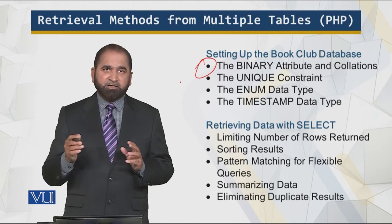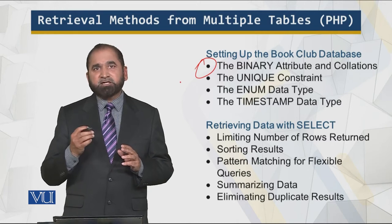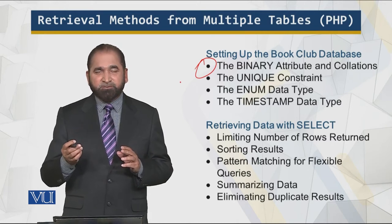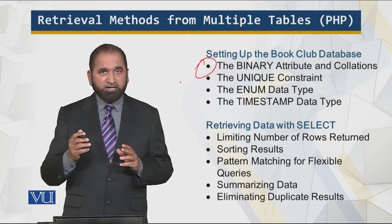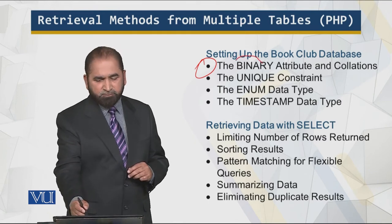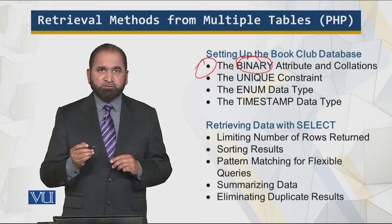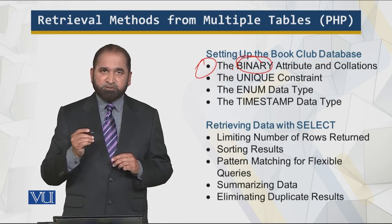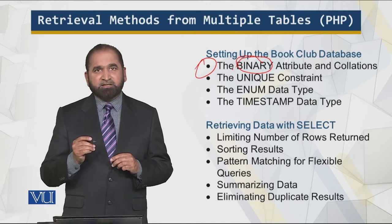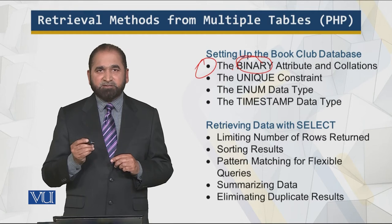If I run a query and retrieve something starting with capital B or lowercase B, the engine will not differentiate. To add this functionality, we use the binary attribute after the variable we are using. When we use the binary attribute, the collation is set, and there is a difference between lowercase b and capital B.